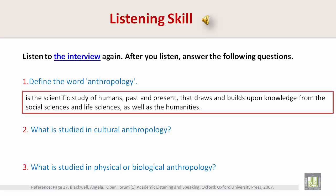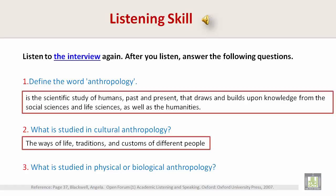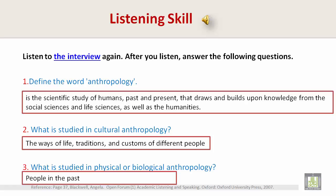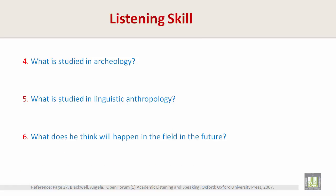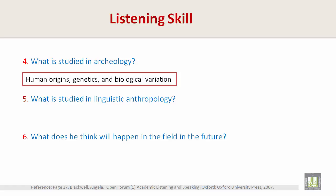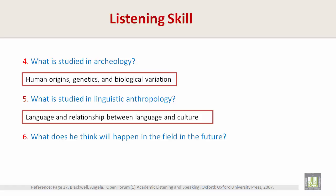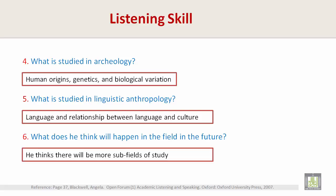Comprehension questions: Number one — define anthropology: the scientific study of humans, past and present, that draws and builds upon knowledge from the social sciences, life sciences, and the humanities. Number two — cultural anthropology studies the ways of life, traditions, and customs of different people. Number three — physical or biological anthropology looks at human origins, genetics, and biological variation. Number four — archaeology studies humans in the past. Number five — linguistic anthropology focuses on language and the relationship between language and culture. Number six — Dr. Tate thinks there will be more subfields of study in the future.